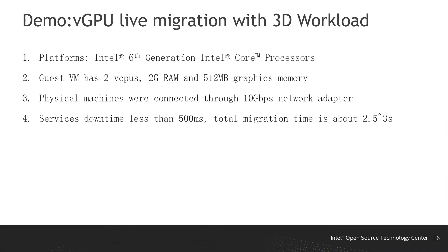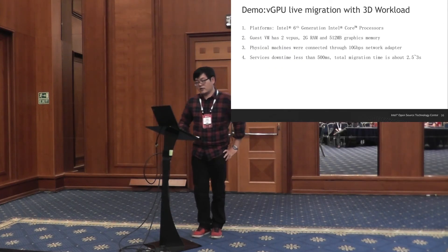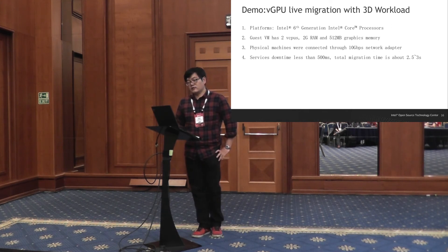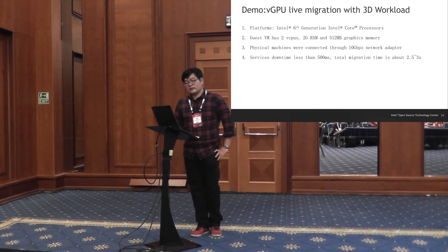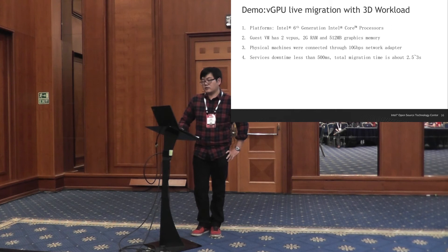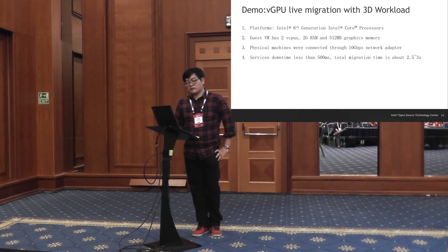We also have a demo video about Intel vGPU live migration with 3D workload. The hardware setup uses two Intel 6th generation core processor platforms. We created a guest VM with two vGPUs, 2 GB system memory, and 512 MB graphics memory. The physical machines are connected with a 10 Gbps network adapter. After measuring the migration, the service downtime is less than 500 milliseconds, and the total migration time is about two and a half to three seconds.